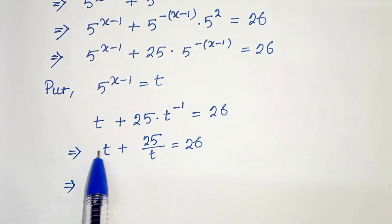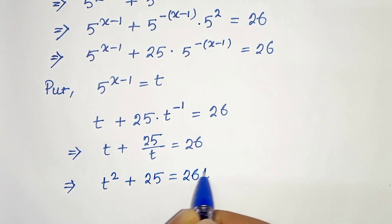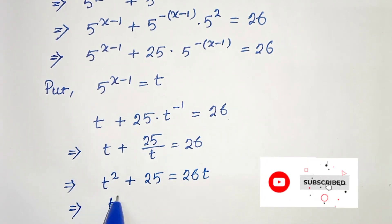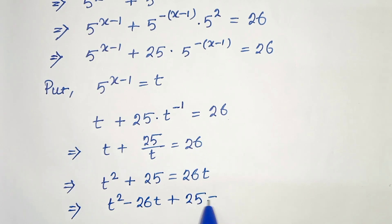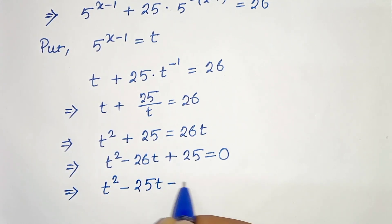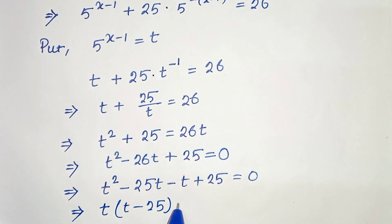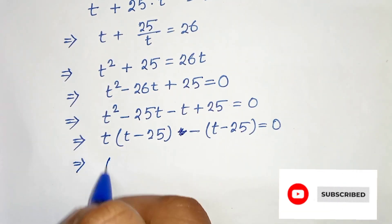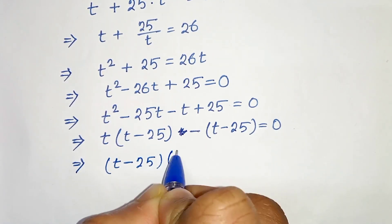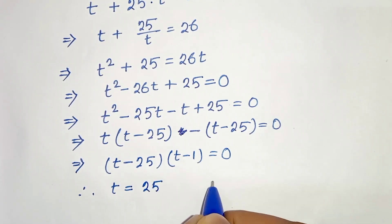Now if we multiply t on both sides we will get t squared plus 25 equals to 26 times t, which is t squared minus 26t plus 25 equals to 0. Let's find the factors: t squared minus 25t minus t plus 25 equals to 0. So t times t minus 25, minus 1 times t minus 25, equals to 0. Therefore t minus 25 common gives t minus 1 equals to 0. So we get two values: t equals to 25 and t equals to 1.